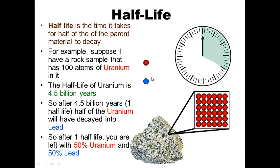Half-life is the time it takes for half of the parent material to decay. For example, suppose I have a rock sample that has 100 atoms of uranium in it. The half-life of uranium is 4.5 billion years, so after 4.5 billion years — one half-life — half of the uranium will have decayed into lead. After one half-life you are left with 50 uranium and 50 lead.